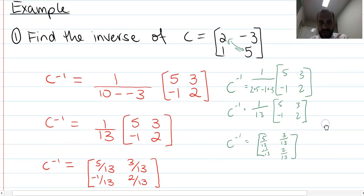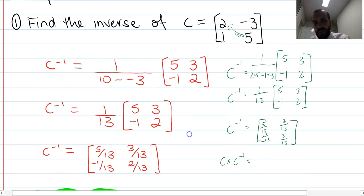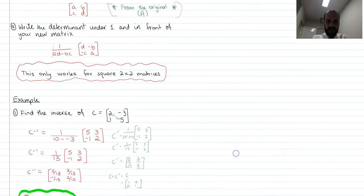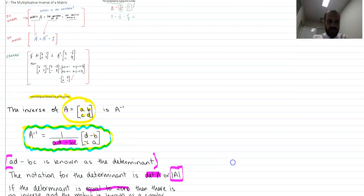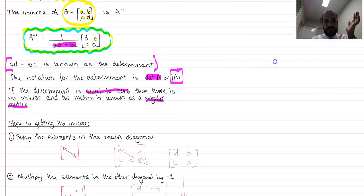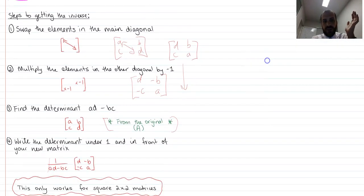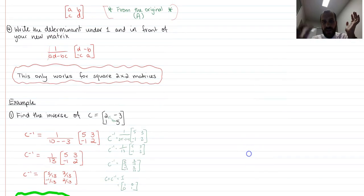Don't forget, that means that C times C to the negative 1, and you can try it out if you want: 2, negative 3, 1, 5 times 5/13, 3 over 13, negative 1 over 13, and 2 over 13 will be equal to the identity matrix, which is 1, 0, 0, 1. Lots of notes there. Make sure that you scroll back through the video and take note of everything that we've been over there. That's the multiplicative inverse of a matrix.